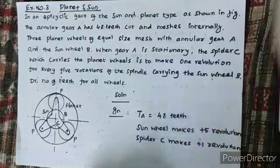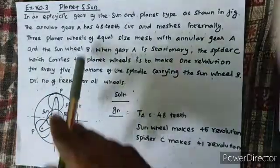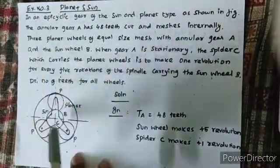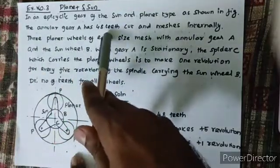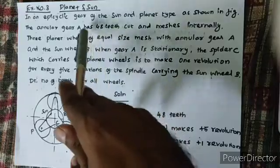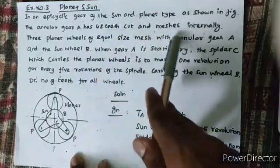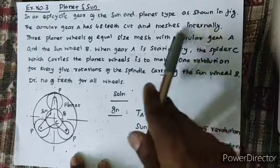Exercise Number 3: Planet and Sun Gear. In an epicyclic gear of the sun and planet type as shown in figure, the annular gear A has 48 teeth cut and it meshes internally. This is very important.